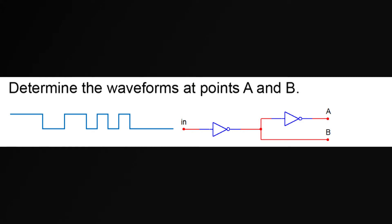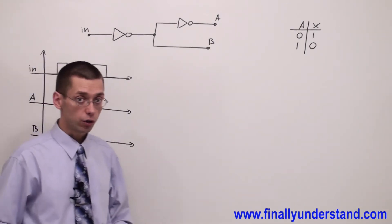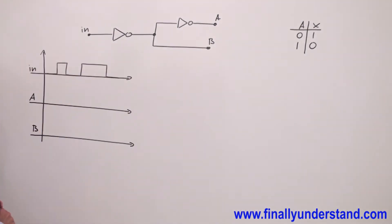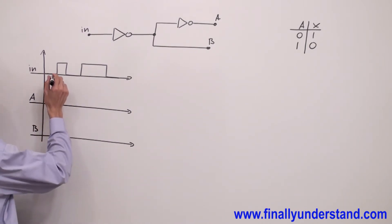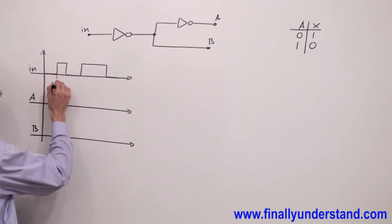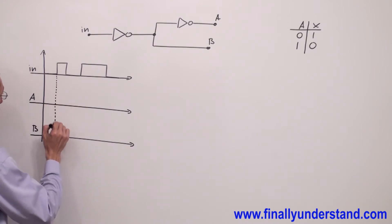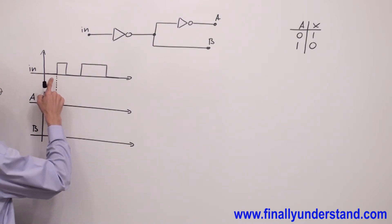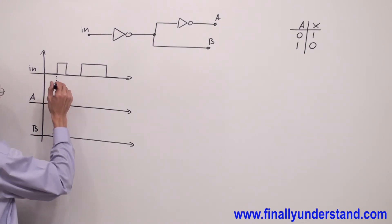Determine the waveforms at points A and B. If you are going to have a problem like this, you're supposed to look at the input waveform first. Draw dash lines from any point of the input waveform where you notice any change — meaning a transition from zero to one or from one to zero.